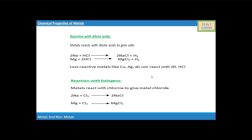Now we will see the reaction of metals with halogens. Metals react with chlorine to give metal chlorides. You can see sodium when it reacts with chlorine, which is a halogen, the reaction will yield NaCl, i.e. sodium chloride.